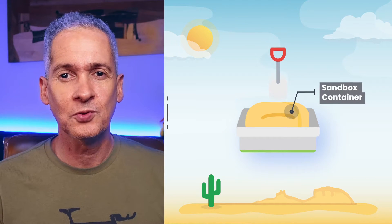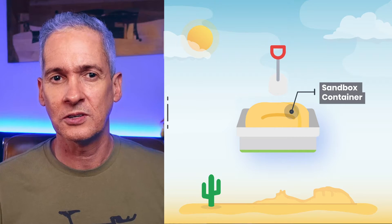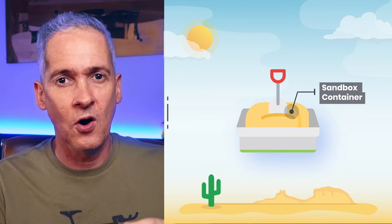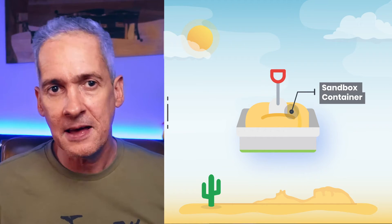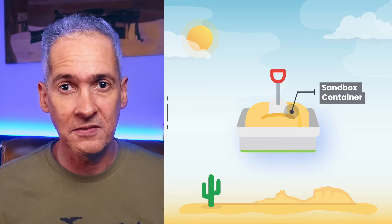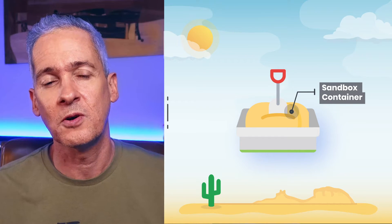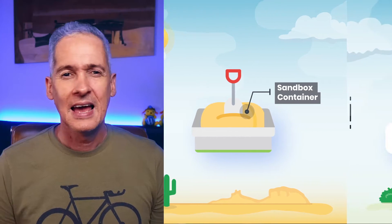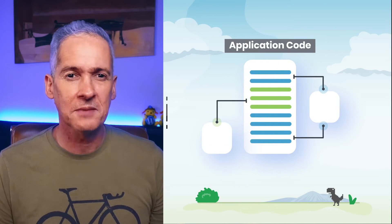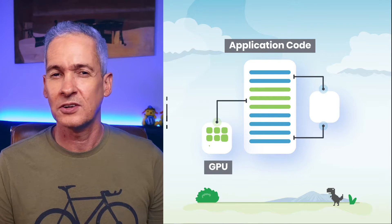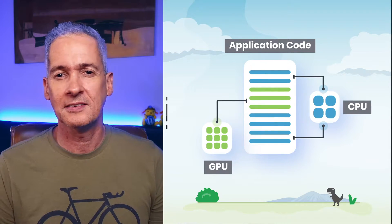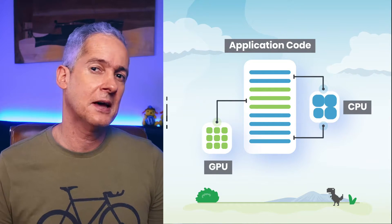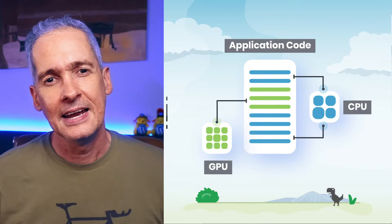Fifth, AMP ensures that all third-party code that runs on our site is properly sandboxed, and it does this by running on secure and independent iframes. This means that slow ads or code-heavy video players won't stop users from actually enjoying the content that you are providing to them. And sixth, AMP takes advantage of the computational capabilities of graphic cards, usually called GPUs, which are commonly available on devices nowadays. For example, it allows only animations that can be run efficiently on GPUs.